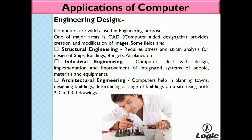The next application is engineering design. Computers are widely used for engineering purposes. One major area is CAD — Computer Aided Design — which provides creation and modification of images. In structural engineering, computers are used for stress and strain analysis for design of ships, buildings, and airplanes. In industrial engineering, computers deal with design, implementation, and improvement of integrated systems of people, materials, and equipment. In architectural engineering, computers help in planning towns, designing buildings, and determining the range of buildings on a site using both 2D and 3D drawings.